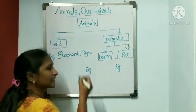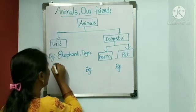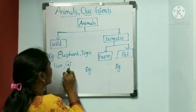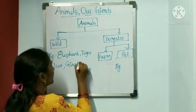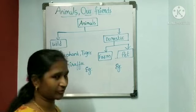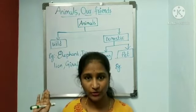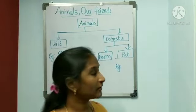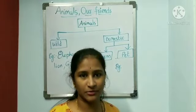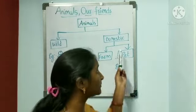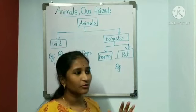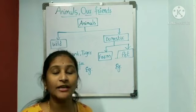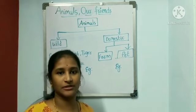Great! What else? Lion. So animals which live in the jungle are called wild animals. Now let us look at domestic animals. Domestic animals means animals which we see around us, which stay with us. Those animals are called domestic animals.